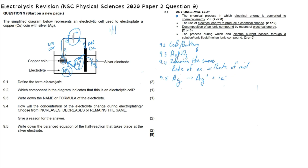When marked according to the guidelines: for 9.1 the definition of electrolysis — any one of the listed definitions is acceptable, with the underlined key words being most important. For 9.2, the answer is a cell or battery. For 9.3, any silver-based electrolyte combined with a non-reacting negative ion is correct. For 9.4, one mark for stating the concentration remains the same and one mark for explaining that the rate of oxidation equals the rate of reduction. Finally, the half-reaction at the electrode shows silver breaking apart to form silver ions and a single electron.